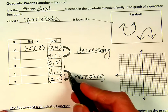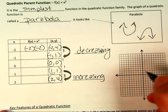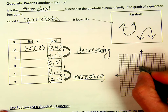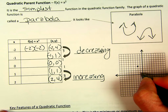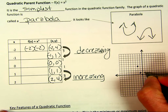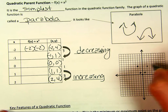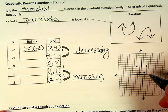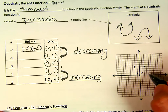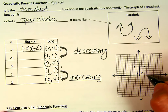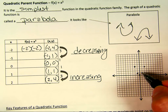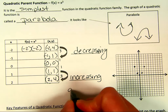We're going to graph these points now. We go to negative 2, up to 4; then negative 1, 1; then 0, 0; then 1, 1; then 2, 4. I want you to notice this pattern, because it always happens in the parent function when there's nothing multiplied in front.